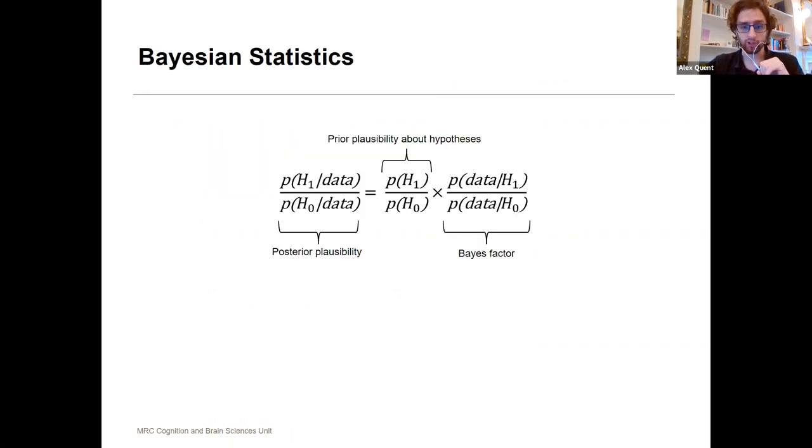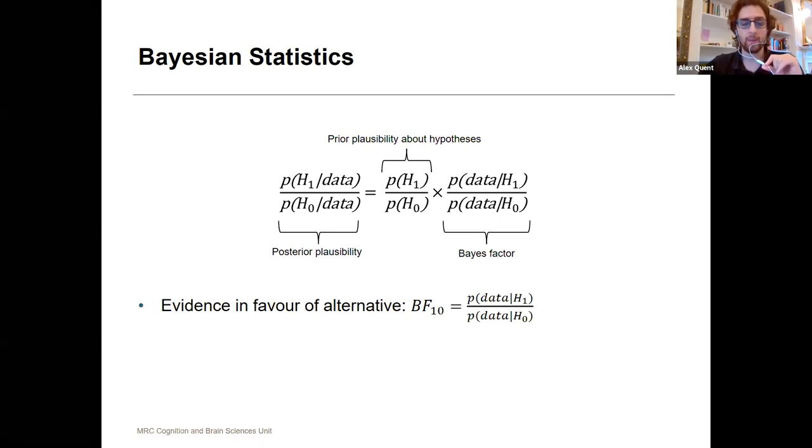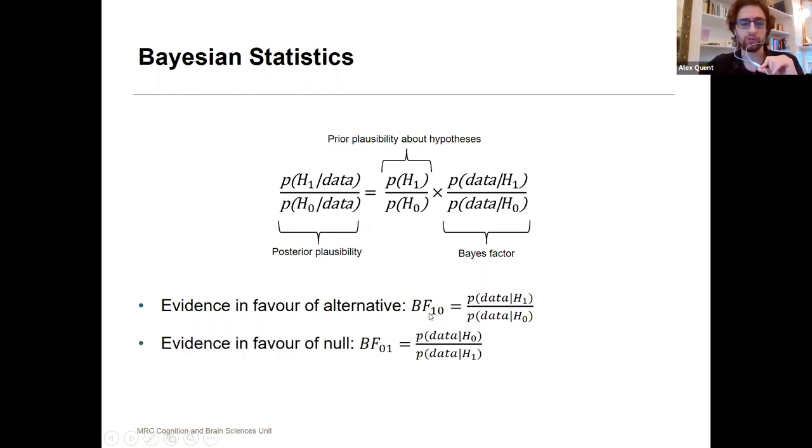With Bayesian statistics, using this formula, we can calculate a Bayes factor, which is basically the ratio between two competing hypotheses. We can quantify the evidence in favor of an alternative hypothesis over a null hypothesis, or we can also do the reverse thing of quantifying evidence in favor of the null hypothesis.